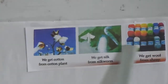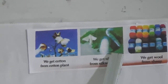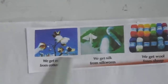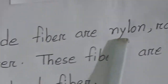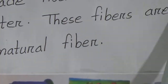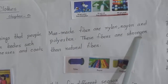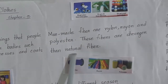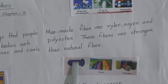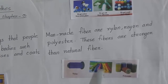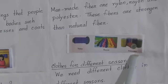These kinds of fibers are natural fibers. Manmade fibers are nylon, rayon, and polyester. These fibers are stronger than natural fibers. You can see in this picture — this is nylon fiber, this is rayon fiber, and this is polyester fiber.